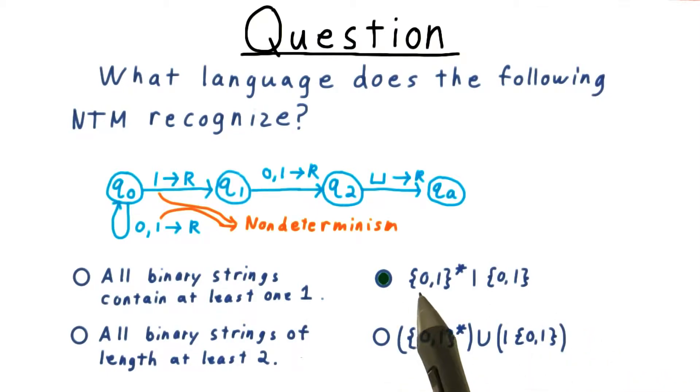The answer is this language: 0, 1 star, 1, 0, 1.